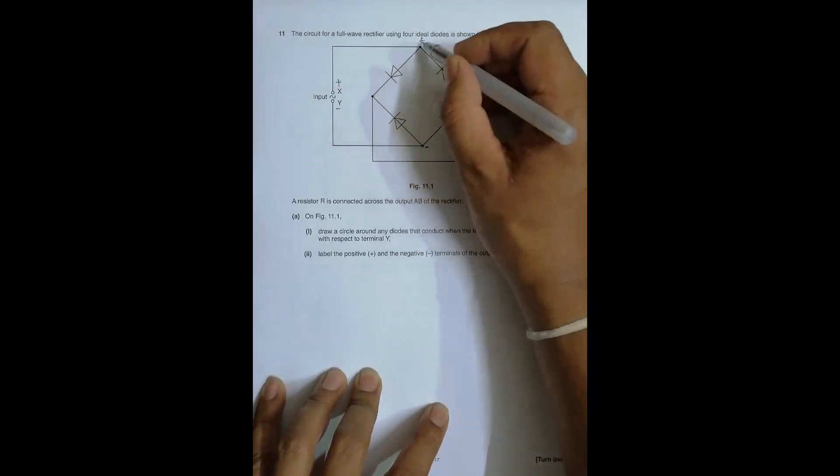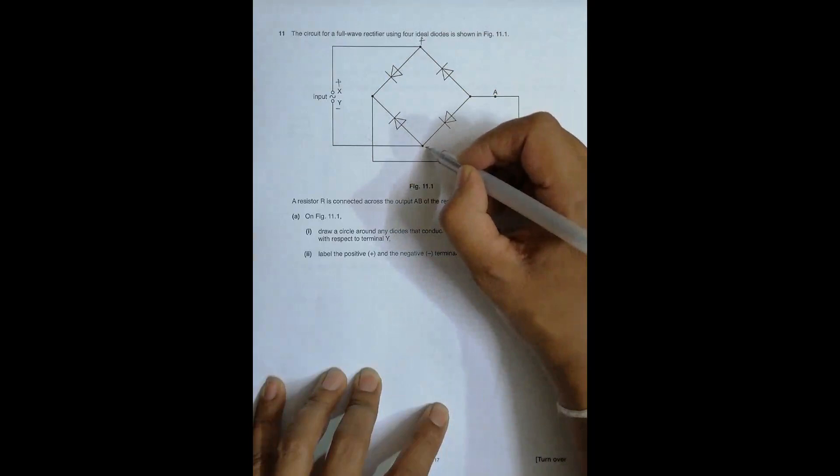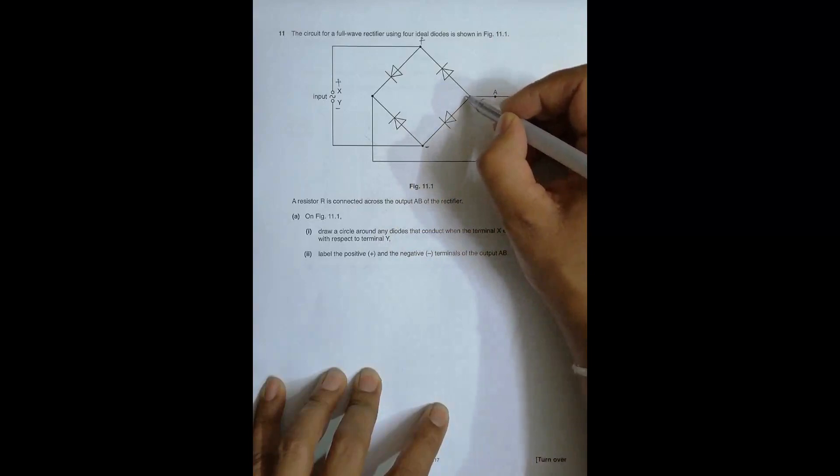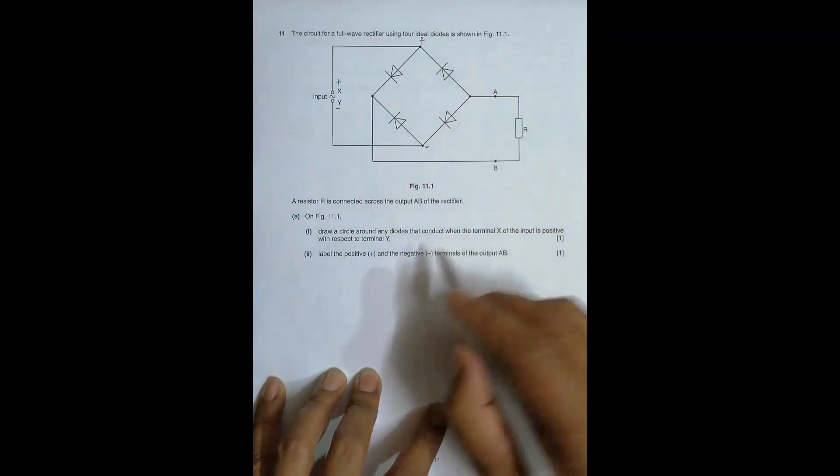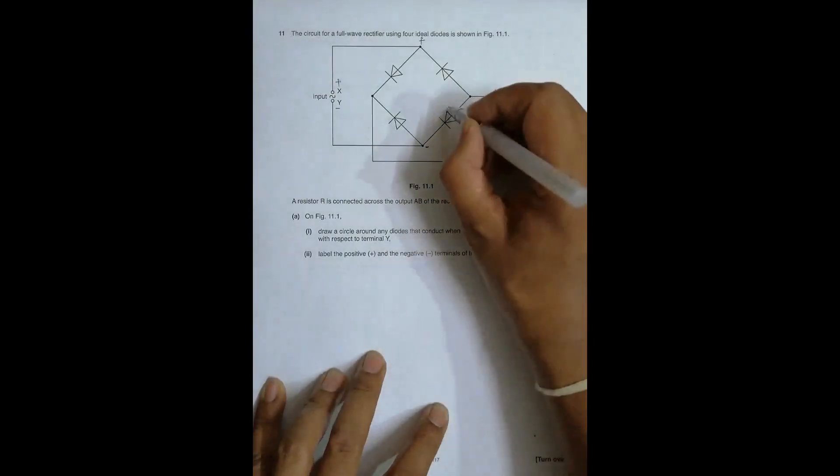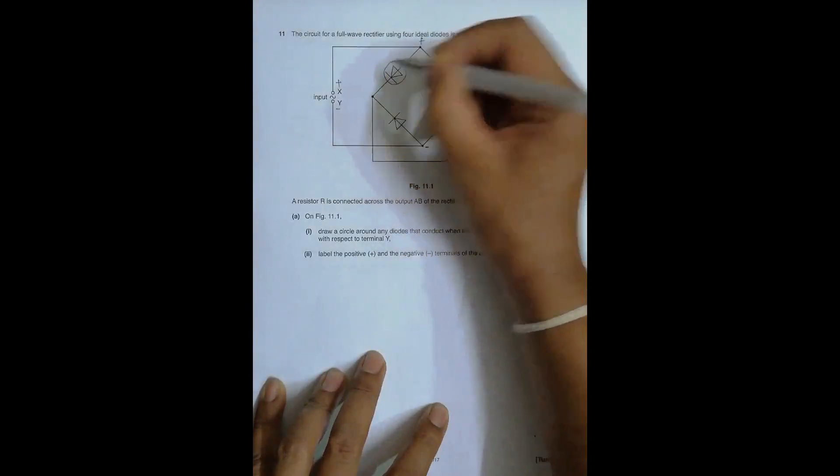But this zero will be negative for this thing. So negative inside, so this thing conducts. Here also it is negative inside, connection with the negative. This is zero, zero is somewhat like positive for this. So positive with P side and negative inside, so this conducts. We have to encircle these two diodes. So this diode conducts and this diode also conducts. We have to put a circle there.